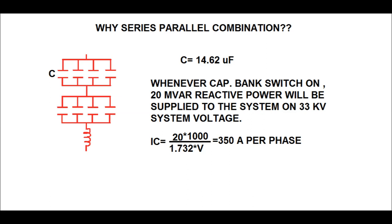Why is the series-parallel combination used instead of a single unit? The value of each capacitor unit is C = 14.62 microfarad. Instead of a series-parallel group, we could use a single unit in each star connection with value 2C, that is approximately 29.24 microfarad.